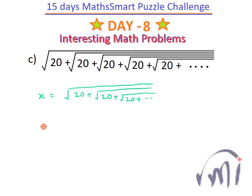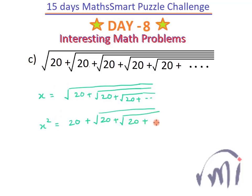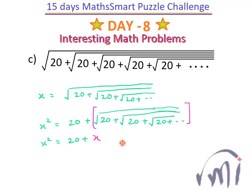I'll square both sides. So x squared equals 20 plus — when I square both sides, only the topmost square root sign on the right-hand side gets removed — giving 20 plus the square root of 20 plus the square root of 20, again continuing infinitely. That remaining infinite part is nothing but x itself. So x squared equals 20 plus x. Bringing everything to the left-hand side gives x squared minus x minus 20 equals 0.